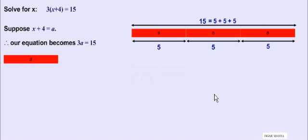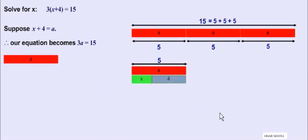So from so far what we have is a equals 5. But what is a? Our a is x plus 4, which can be represented like this.